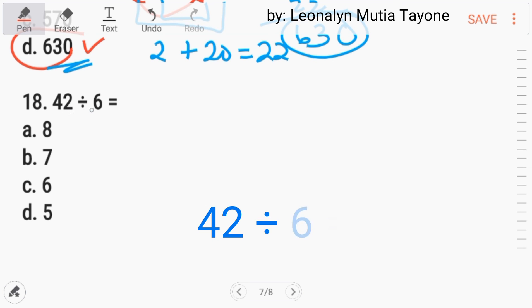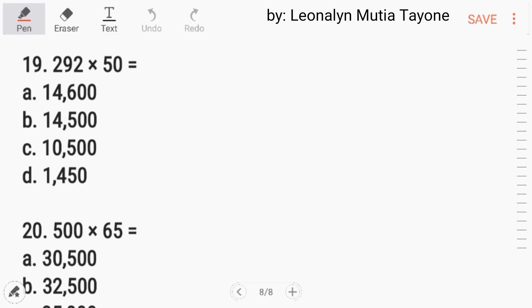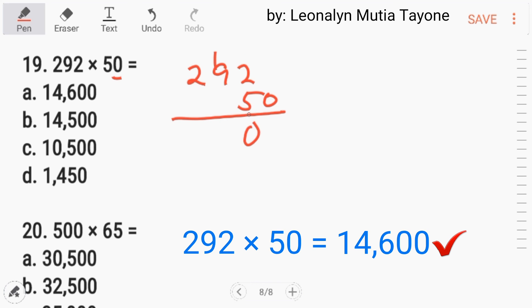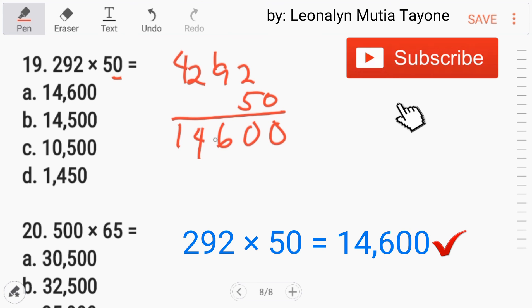Number 18, 42 divided by 6. The answer is 7. Number 19, 292 times 50. Disregard muna natin yung 0. Itong 292 times 5. Yan lang muna. So yung 0 mamaya na. And that is 10, 45, that is 46. 10, 14. Takamway daw yung 0. So the answer is 14,600, Letter A.